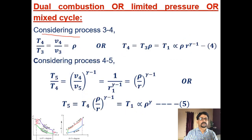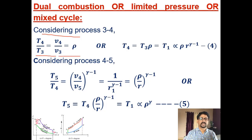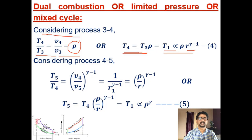For process 3 to 4 (constant pressure), using P3·V3/T3 = P4·V4/T4 with P3 = P4, we get T4/T3 = V4/V3 = ρ. Therefore T4 = T3 · ρ. Substituting T3 = T1 · α · r^(γ−1), we get T4 = T1 · α · ρ · r^(γ−1).